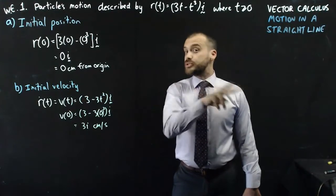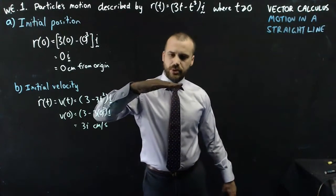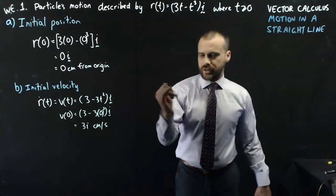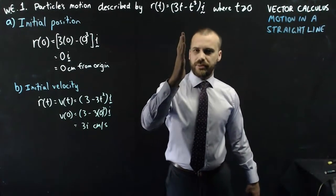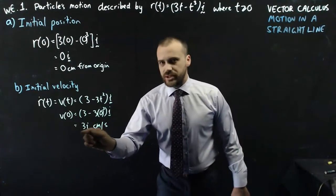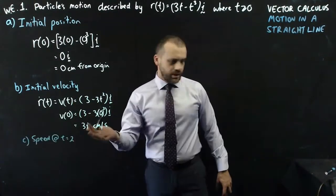But in this case, they are the same. Because it's moving in the i direction at 3 centimeters per second, because it's not moving in the i and j components, this is the magnitude of the velocity, which means it's also the speed.